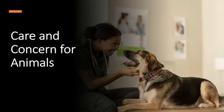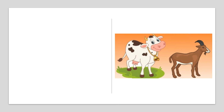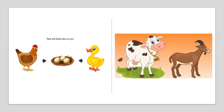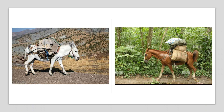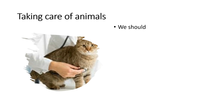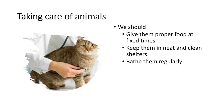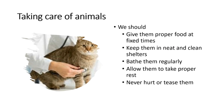We keep many animals at home as our pets. We keep domestic animals such as goats, hens and ducks on our farms. Animals help us in many ways. Cows and goats give us milk. Hens and ducks give us eggs. Animals such as horses and donkeys carry loads for us. Therefore, it is our duty to take proper care of them. We should give them proper food at fixed times, keep them in neat and clean shelters, bathe them regularly, allow them to take proper rest, never hurt or tease them, and take them to a vet when they are sick.